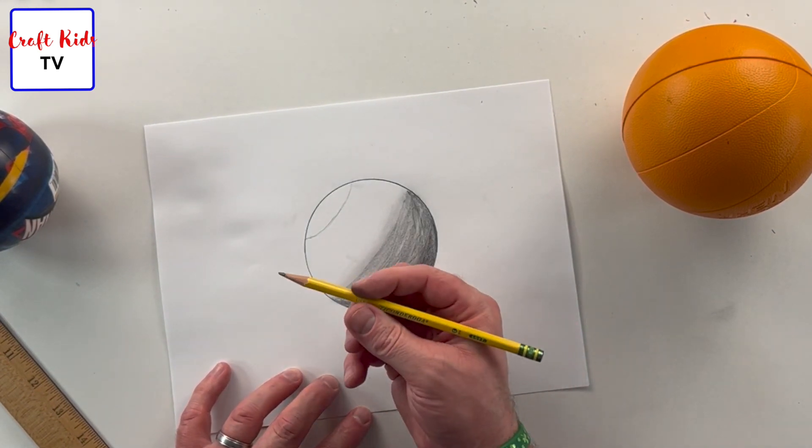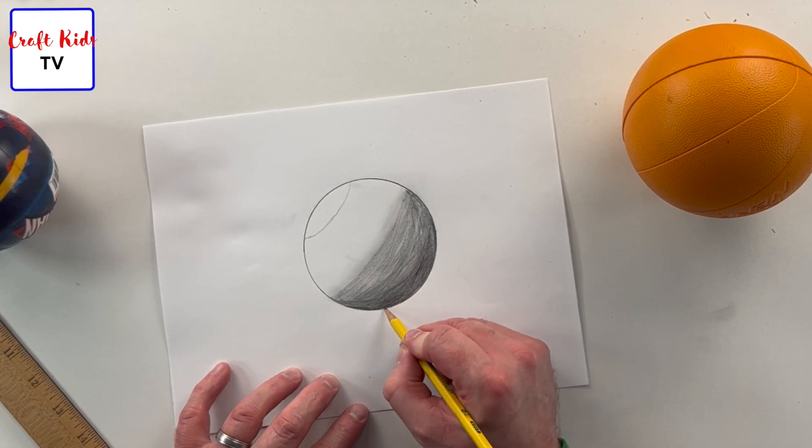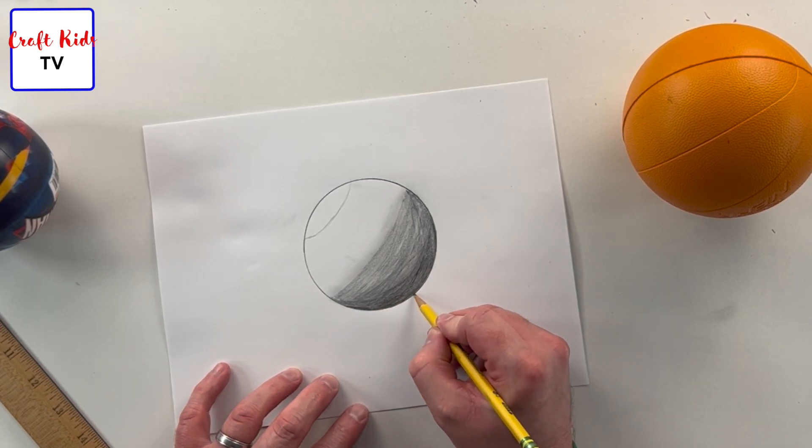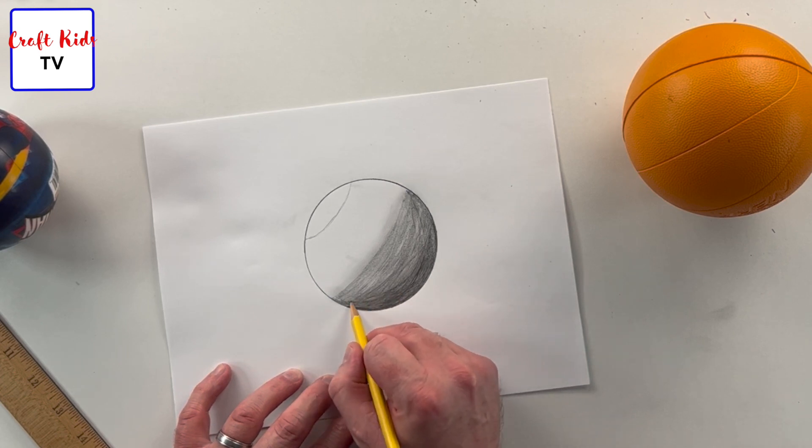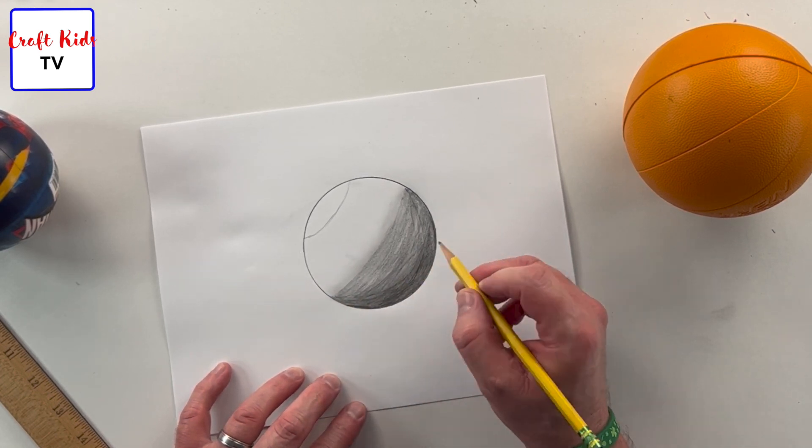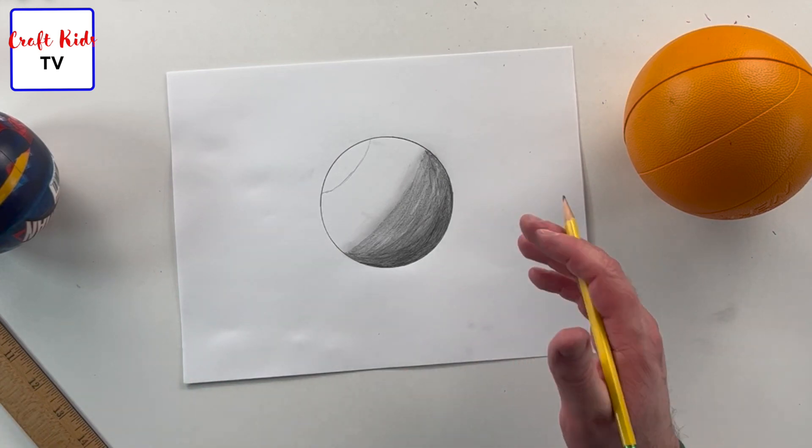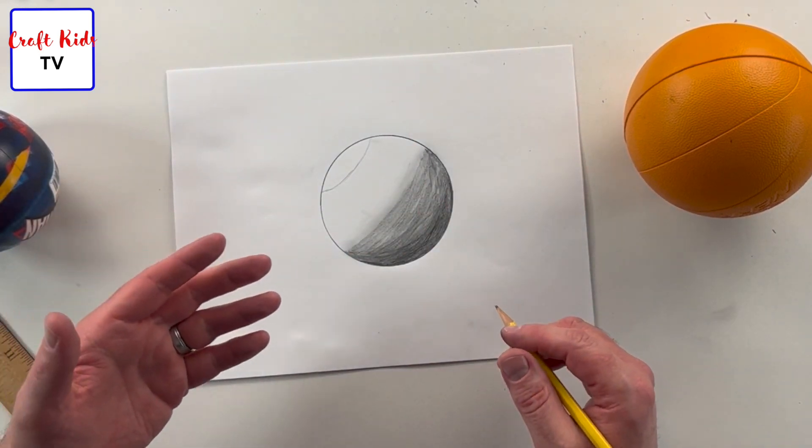And I'm just using a regular number two pencil, so it will only get so dark, but generally the harder you push the darker it's gonna get. So already we have something that's starting to take shape, it's starting to look like a sphere.